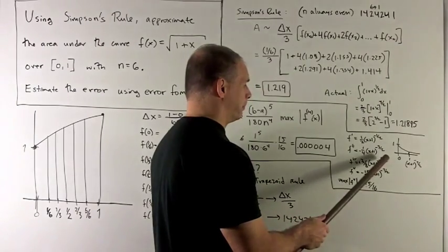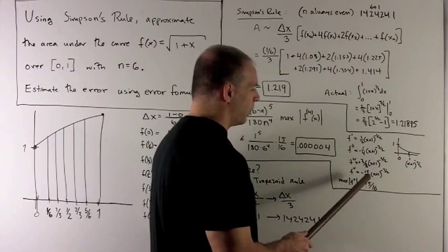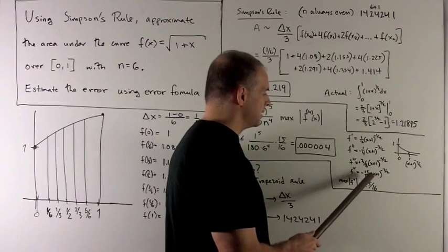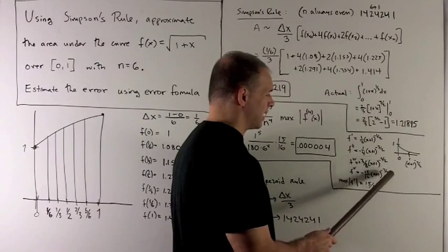bring the 5 halves down, subtract 1, until I wind up with a minus 15 sixteenths, x plus 1 to the minus 7 halves.